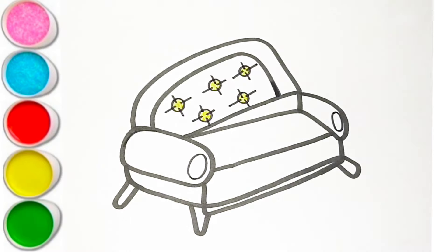A is for apple, a-a-apple. B is for ball, b-b-ball. C is for cat, c-c-cat. D is for doll, d-d-doll.